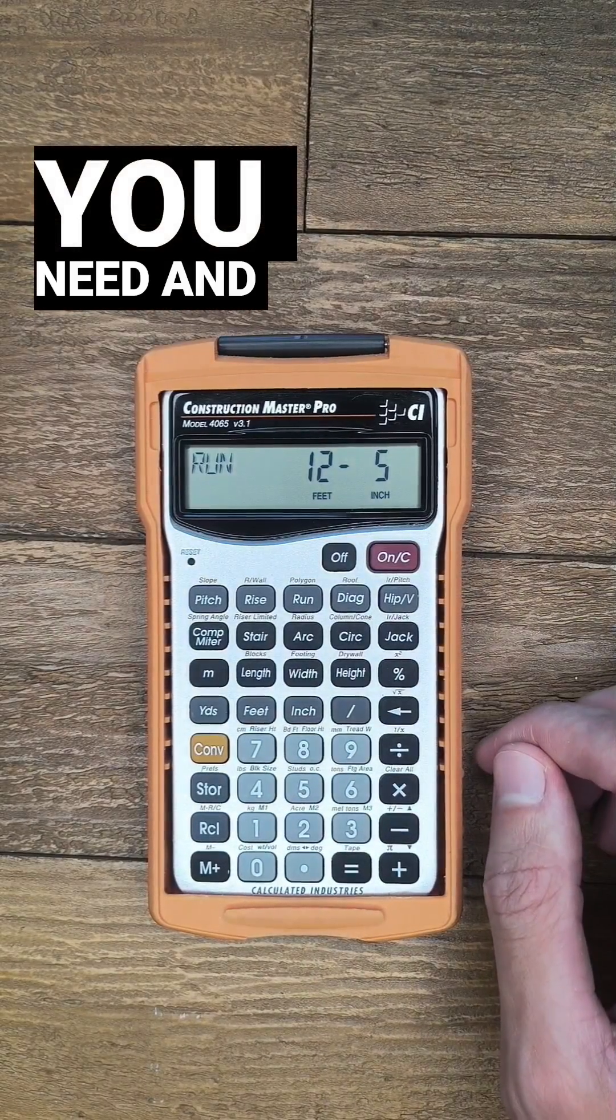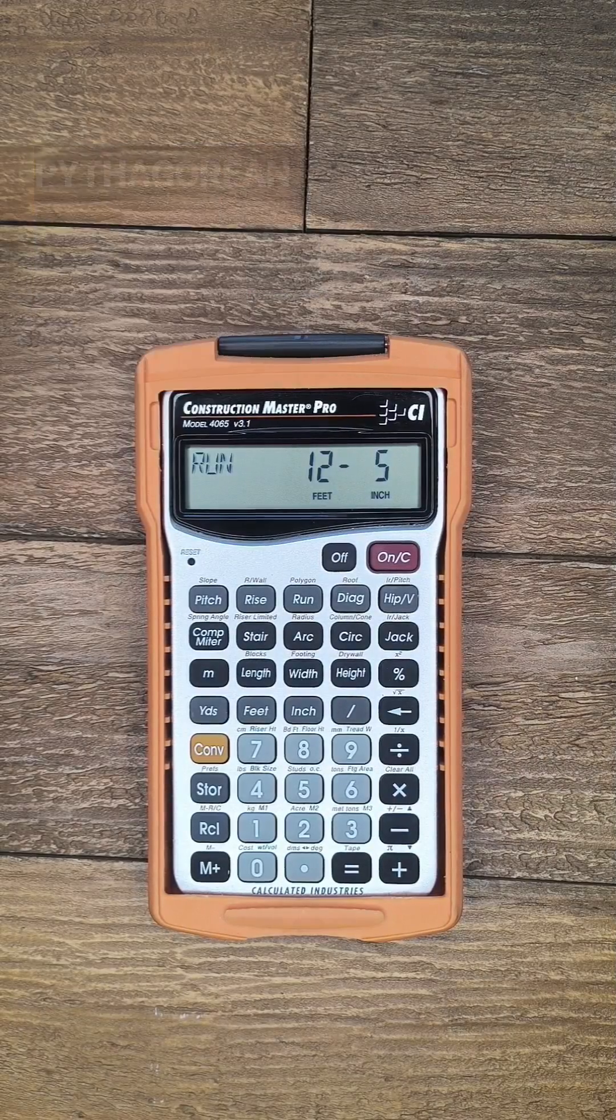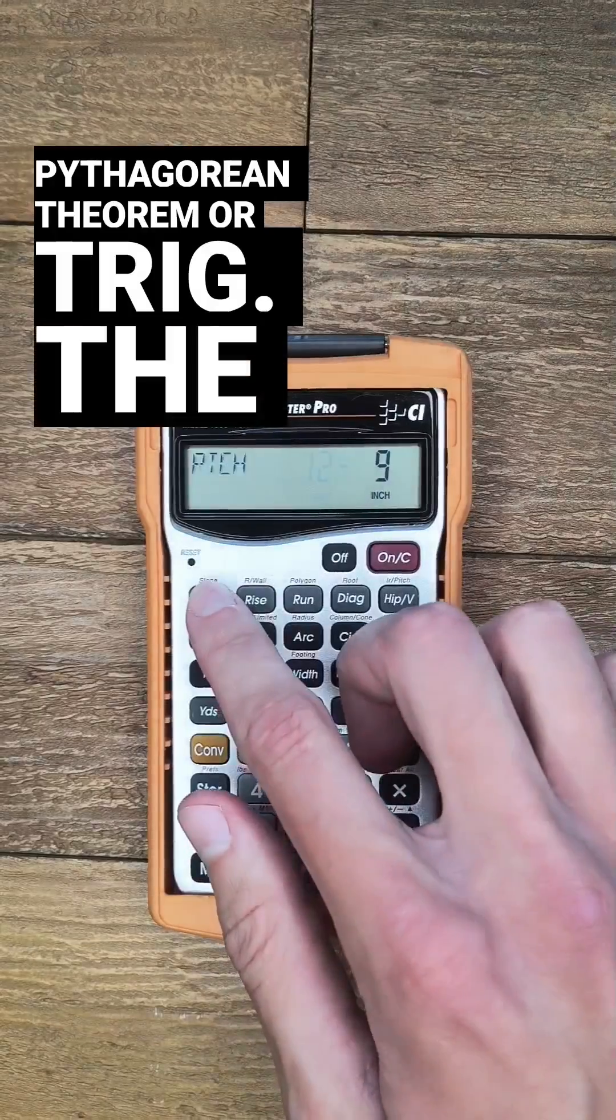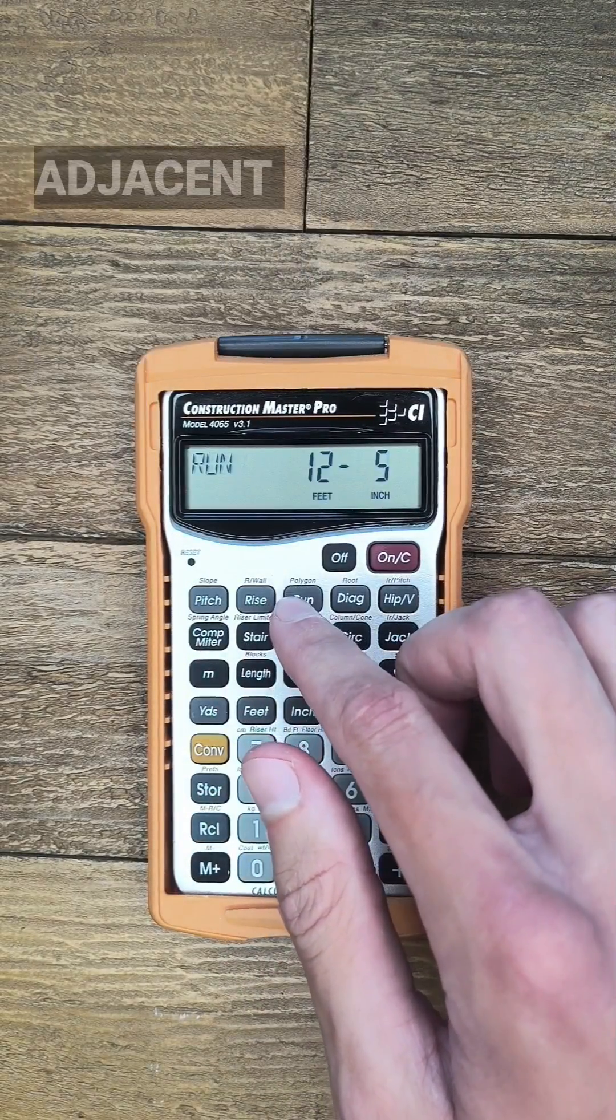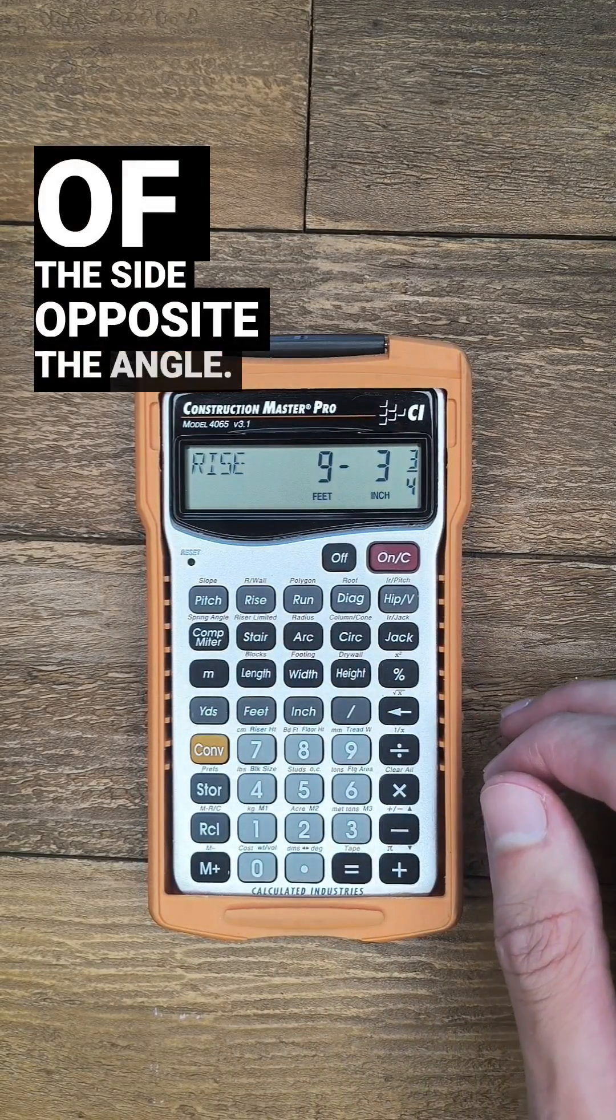With that, the calculator has everything you need and it's just simplified right triangle geometry so you don't have to use the Pythagorean theorem or trig. The pitch is your angle, the run is adjacent to that angle, and if I push rise it shows me the length of the side opposite the angle.